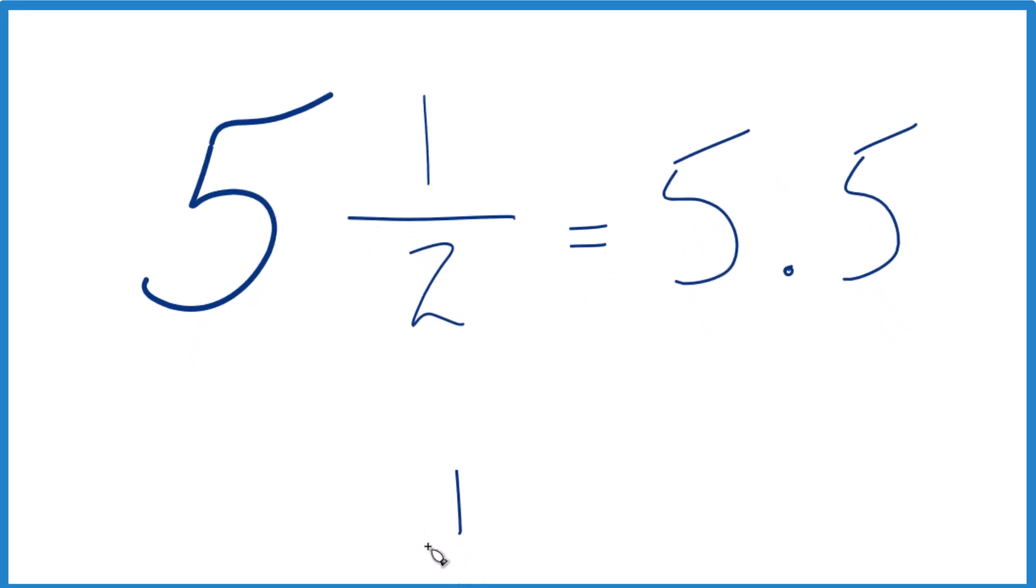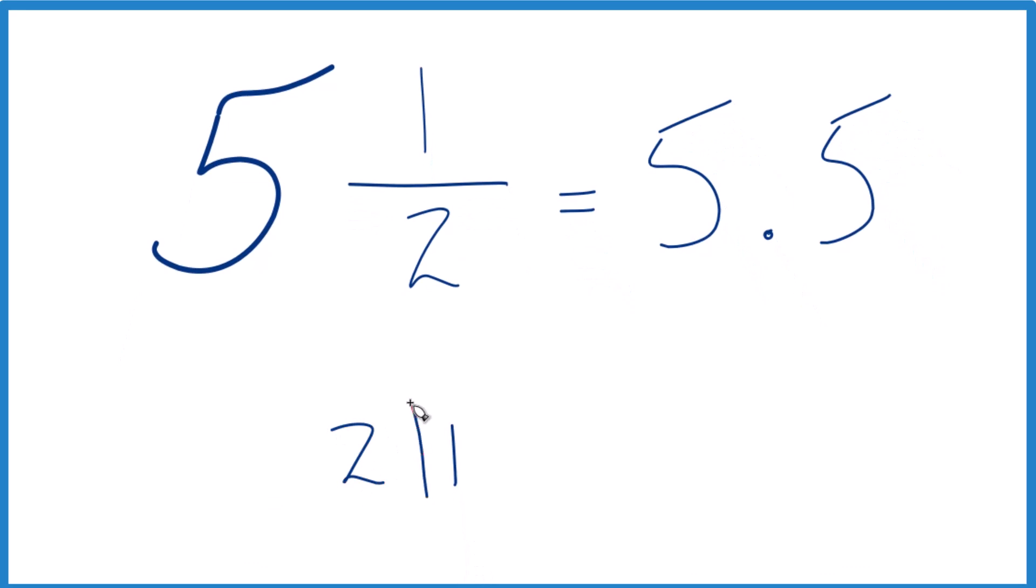So we could say we have one, and we want to know how many times two goes into one. So one divided by two, one-half. Two doesn't go into one. Let's call this ten, then we have to put a zero and a point up here.